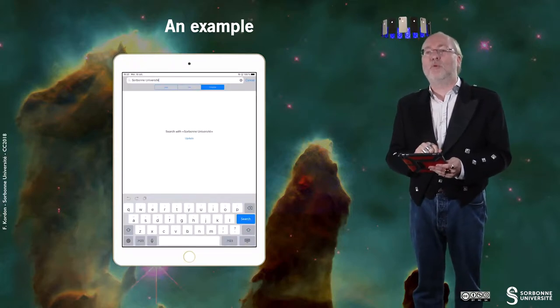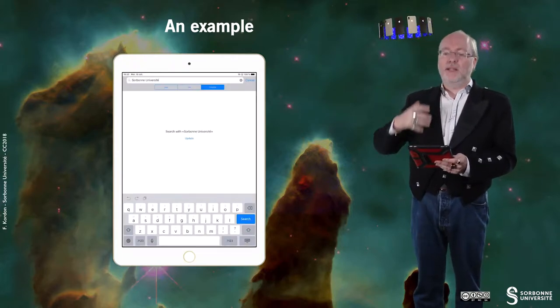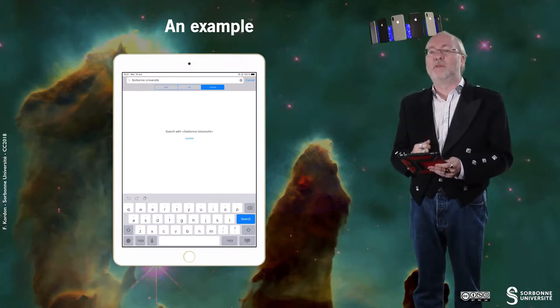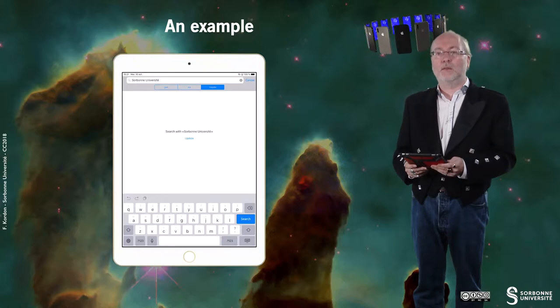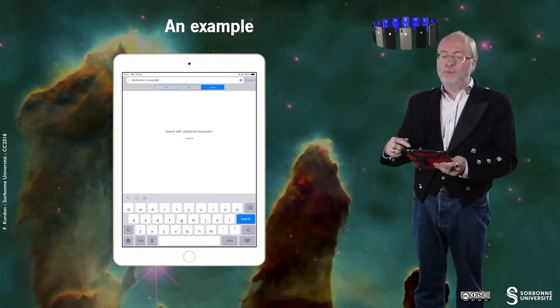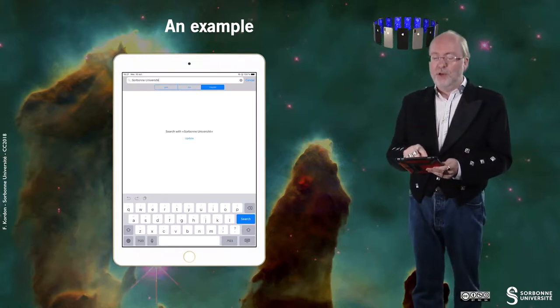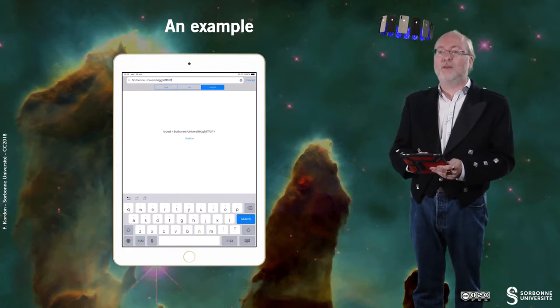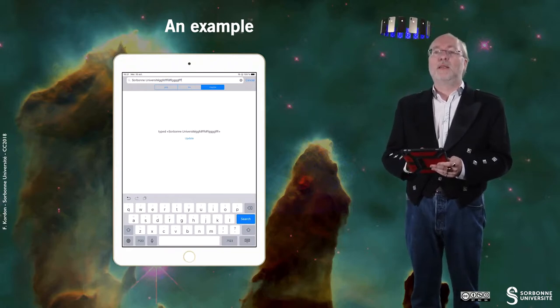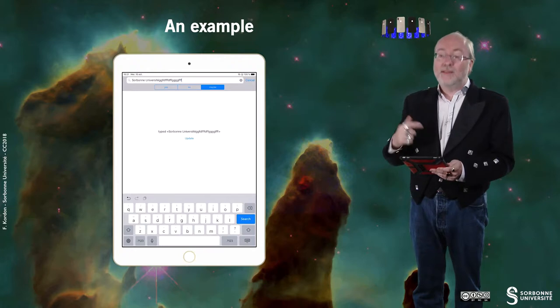But if I select one item, then it sets up this item or the corresponding value in the search bar text area. And then it generates the search, which is illustrated here by the update of this label.